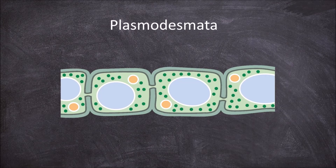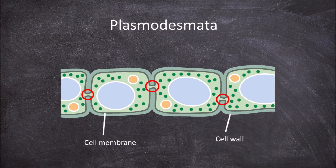In this video we're going to go over the structure and function of plasmodesmata. Plasmodesmata are microscopic tubular extensions of the plasma membrane that go through the cell wall and connect the cytoplasms of two cells next to each other in plants.